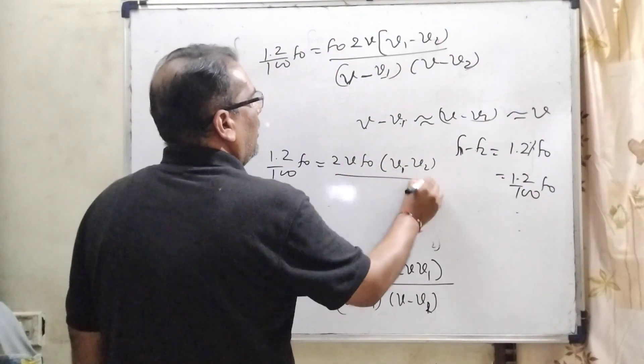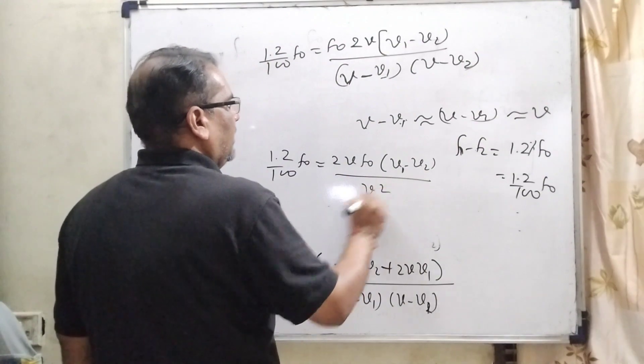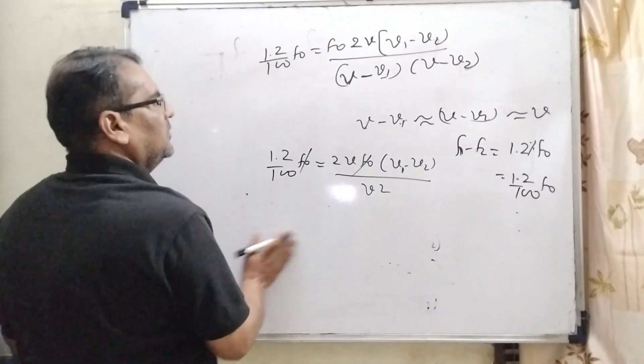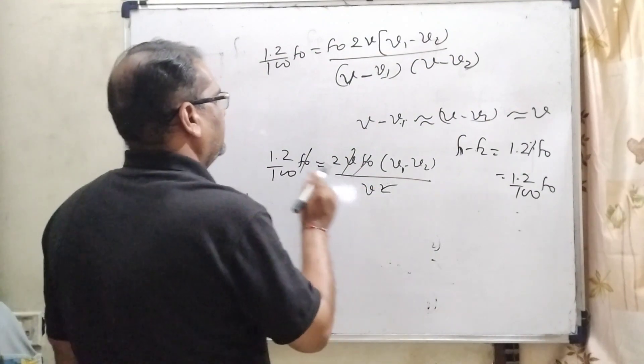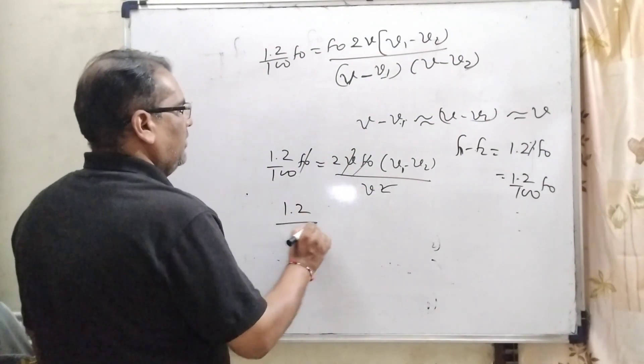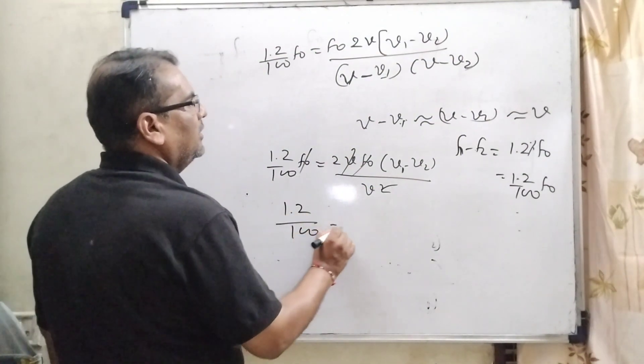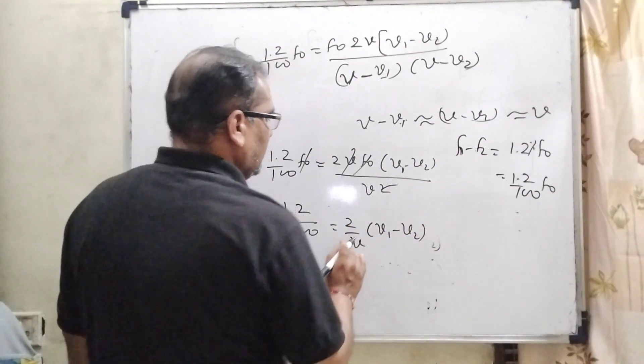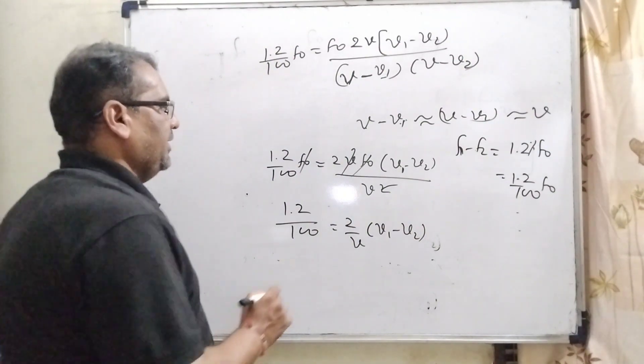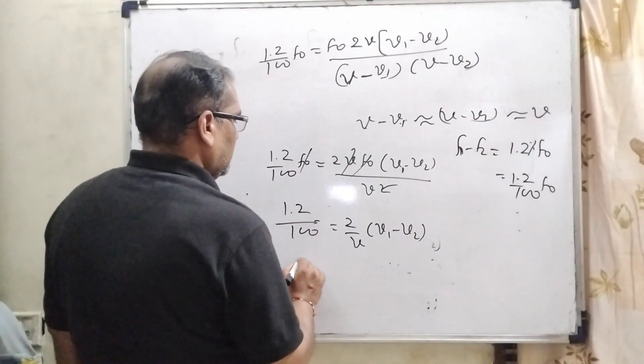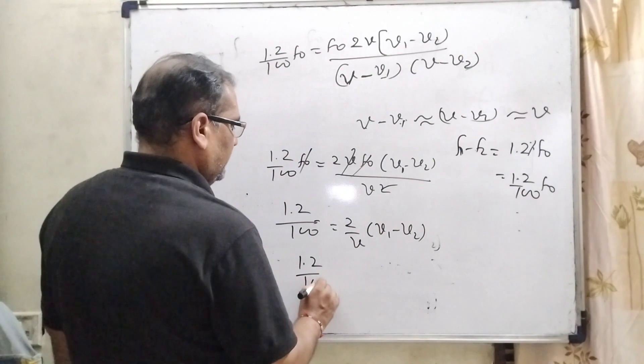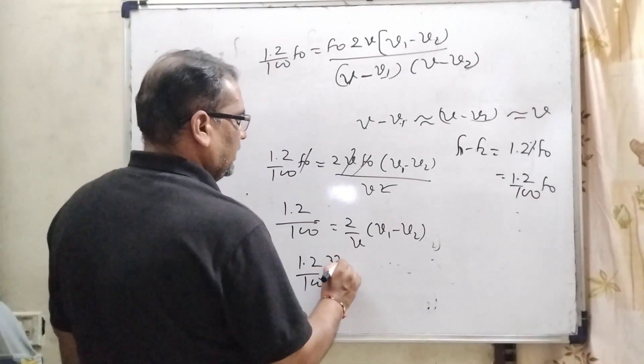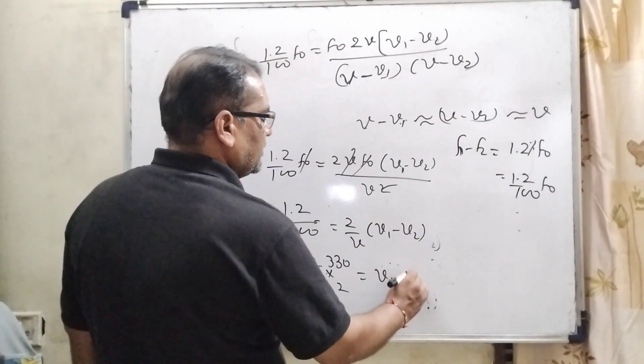Here F0 F0 cancel out, one V cancels out, then it can be written as 1.2 upon 100 equal to 2 by V times (V1 minus V2). Here V is given as 330 speed of sound in air. So 1.2 upon 100 and this is 2 and 330 equal to V1 minus V2.